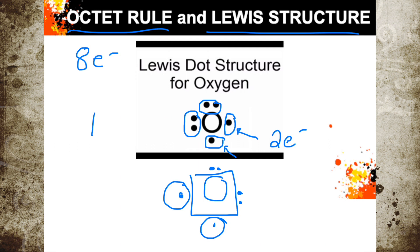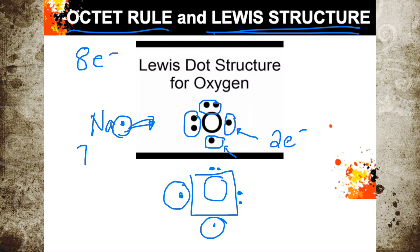For sodium, it has only one valence electron. Therefore, sodium can either accept seven electrons or just release that one electron. Since each electron transfer requires a certain amount of energy, accepting seven electrons would require far more energy, so it's easier to remove the one electron. Since we're only talking about Lewis structure here, we will discuss the transfer and acceptance of electrons in another video. So Na, which is in group 1A, will have one dot outside.